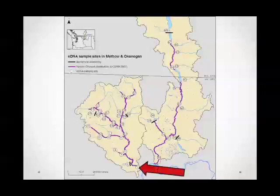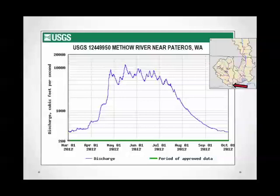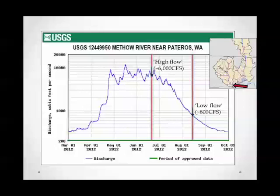Looking at the lowest site in the Methow subbasin, using a USGS StreamGage hydrograph, our high-flow sampling event was basically during spring runoff in June at around 6,000 CFS. Our second event during low flow had flows reduced to about 800 CFS. Throughout both the Methow and Okanagan, flows were about eight to ten times higher in June than in August.